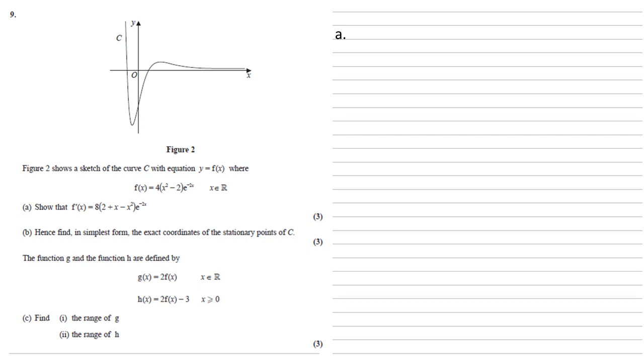For part A we need to show that f dash x equals 8 lots of 2 plus x minus x squared times e to the minus 2x. So we've got our function f of x. We can see that this is two functions of x multiplied together. There's the 4 x squared minus 2 and there's the e to the minus 2x. So we're going to use the product rule.